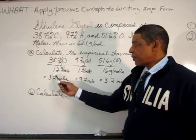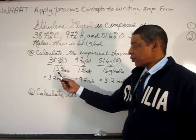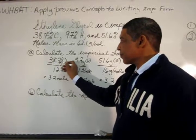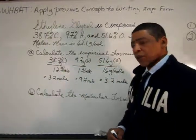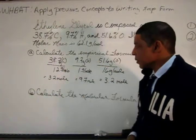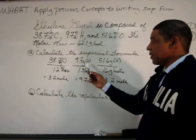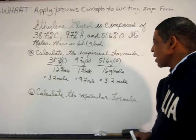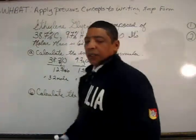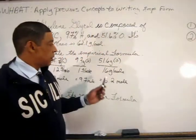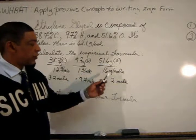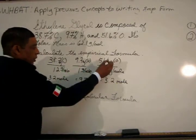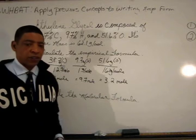38.7 grams divided by 12 grams per mole, where grams cancel, is equal to 3.2 moles. 9.7 grams divided by 1 gram per mole is equal to 9.7 moles. And 51.6 grams divided by 16 grams per mole is equal to 3.2 moles.